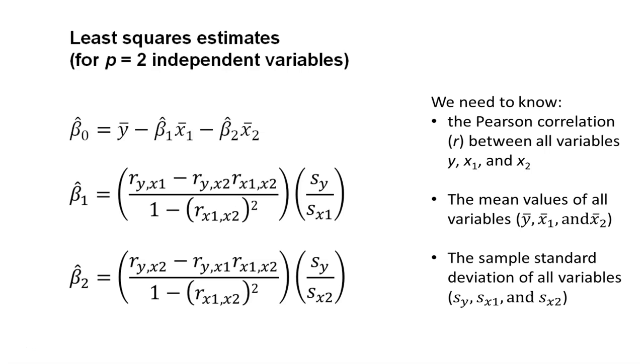We'd need to know the Pearson correlation coefficient between all of the variables between y and x1, between y and x2, and between x1 and x2. We would need to know the mean values for all the variables. We'd also need to know the sample standard deviation of all the variables.